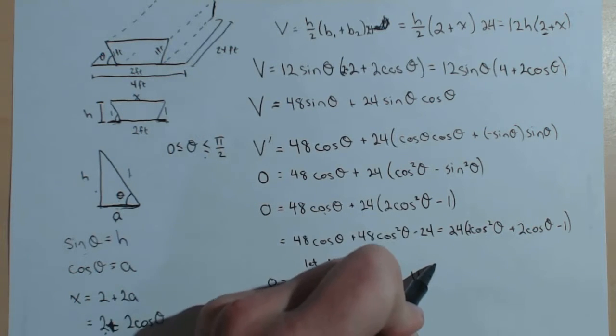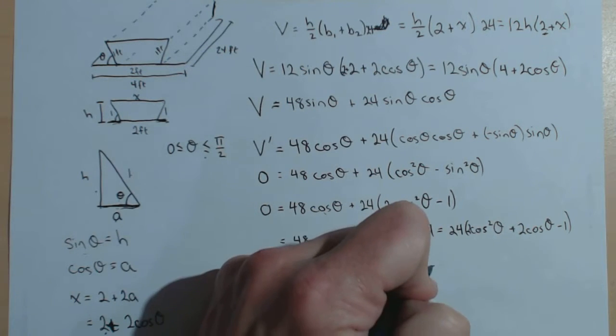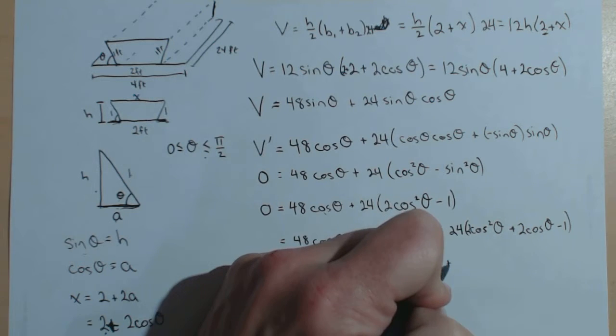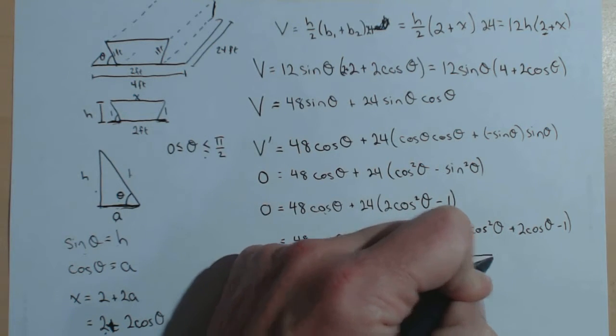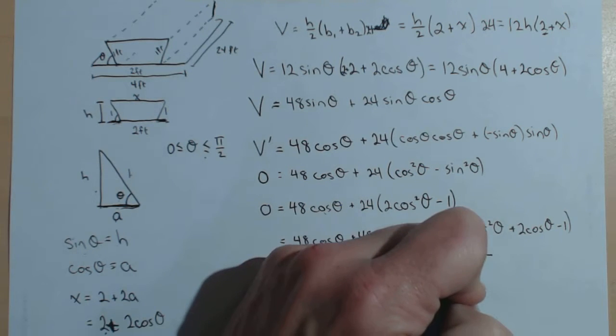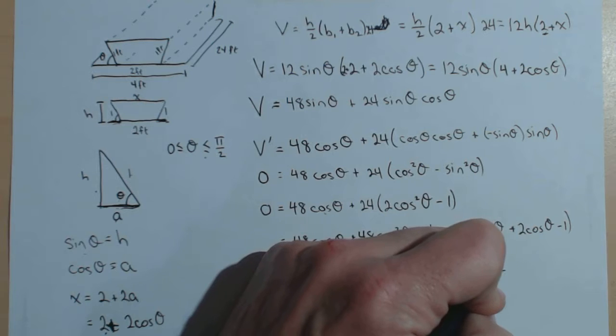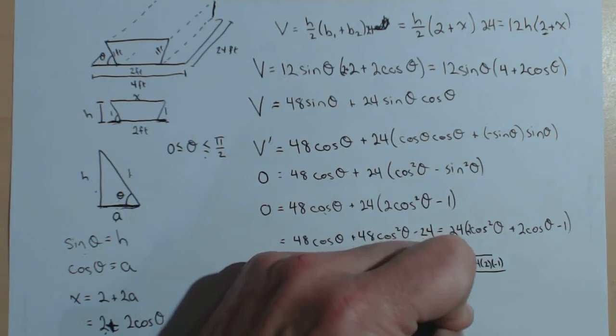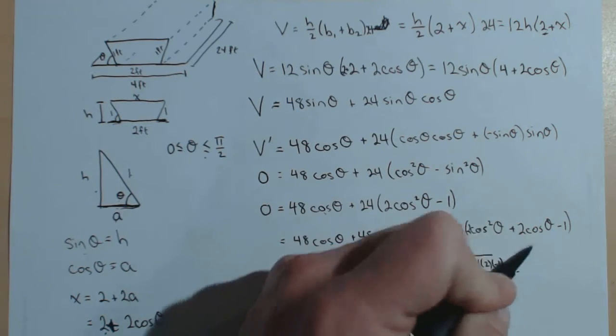This can be solved with the quadratic formula. So, u equals negative 2 plus or minus the square root of 2 squared. So, 4 minus 4 times a, which is 2, times c, which is negative 1, all over 2a.